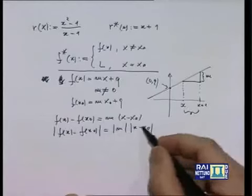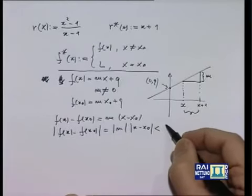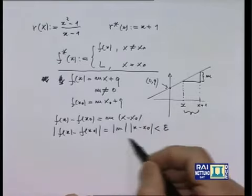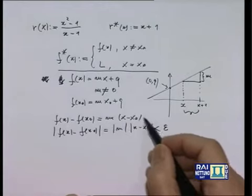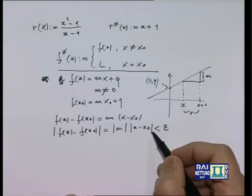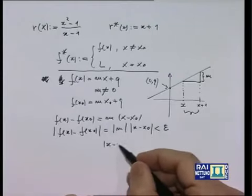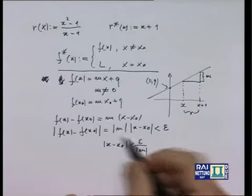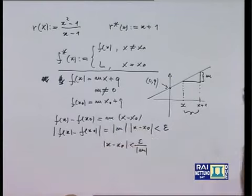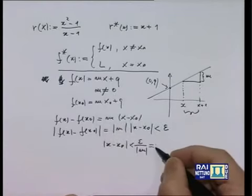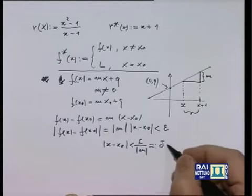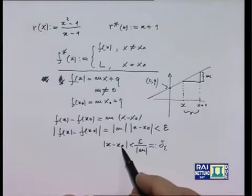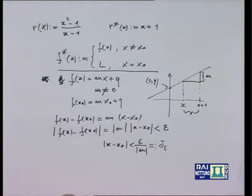Richiedo che questo prodotto sia minore di una quantità epsilon positiva prefissata. Ho una disequazione da risolvere rispetto alla variabile |x - x₀|: trovo |x - x₀| < epsilon / |m|. Ho supposto che m non fosse 0. Dunque se battezzo delta(epsilon) = epsilon / |m|, quando x dista da x₀ meno di questo delta(epsilon), le cose vanno come desidero.